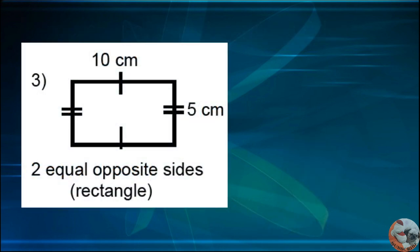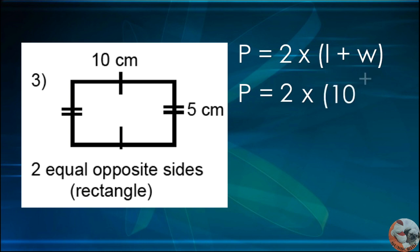Let's have an example. Given a rectangle with the following dimensions, using the formula P equals 2 times quantity L plus W. P equals 2 times the measurement of the length, which is 10, plus the measurement of the width, which is 5. P equals 2 times 15. P equals 30 cm.